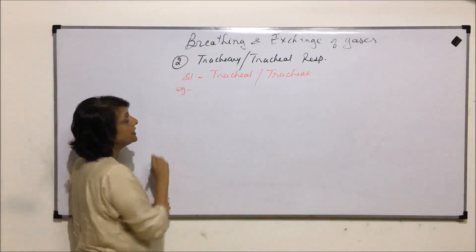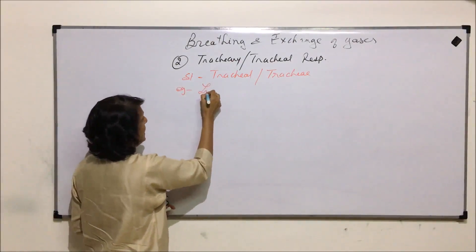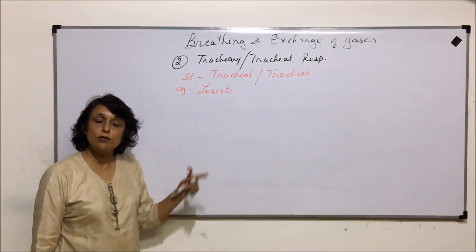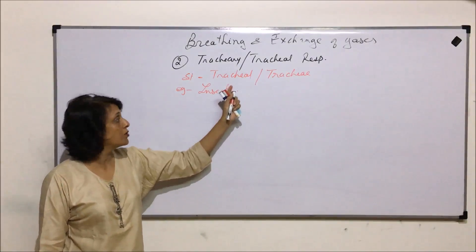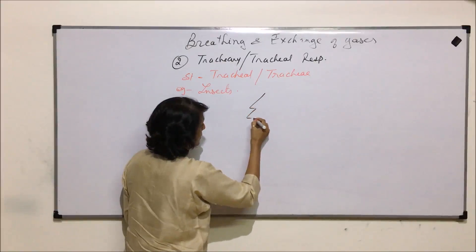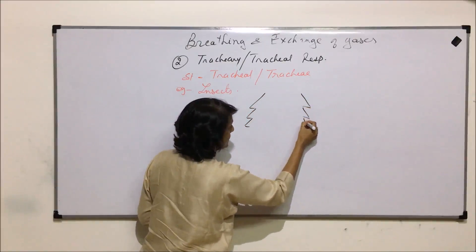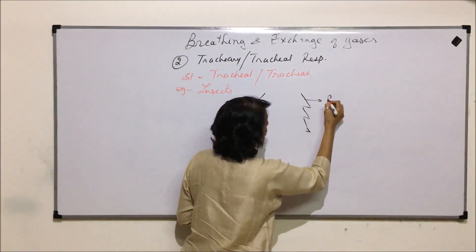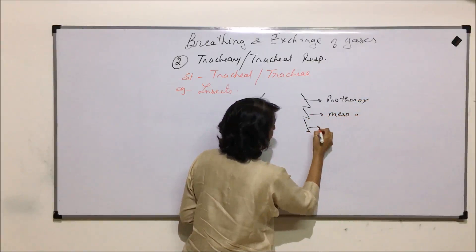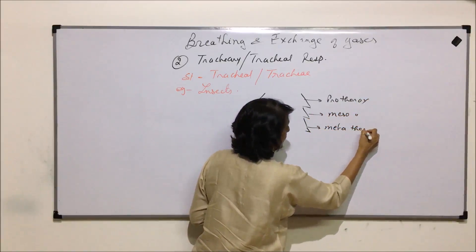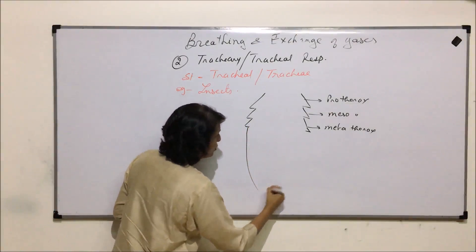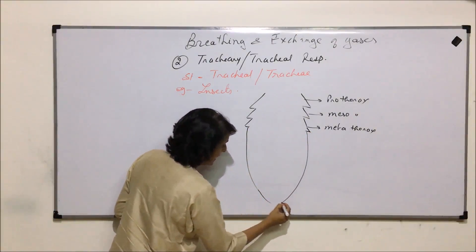An example where we see this kind of respiration is in insects. We will take the example of cockroach to understand how exactly these tubes are arranged. In the body of cockroach there are three thoracic segments: prothorax, mesothorax, and metathorax. And there are ten abdominal segments.